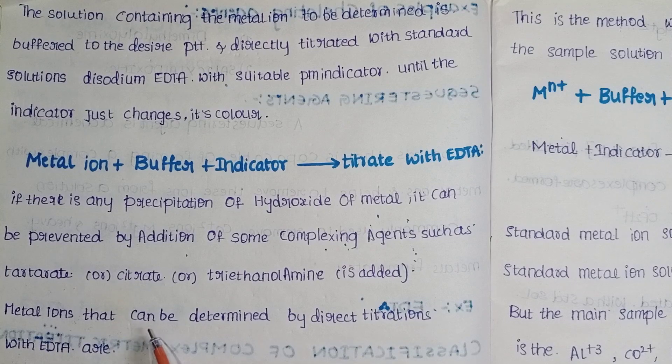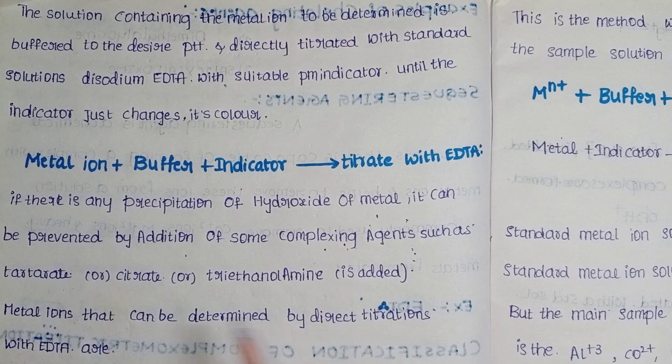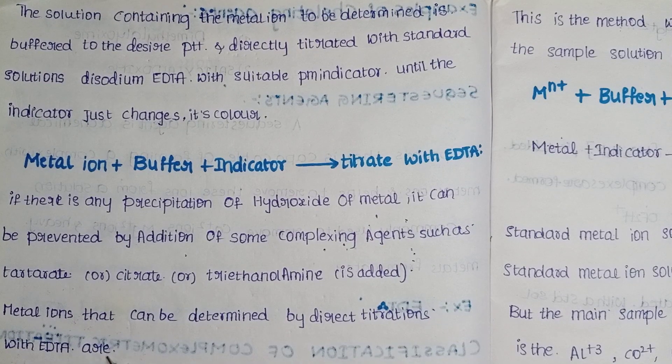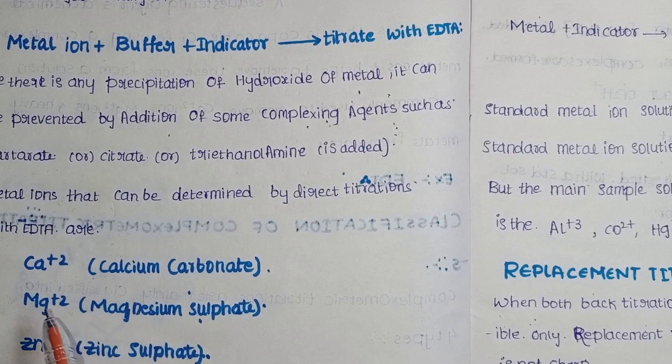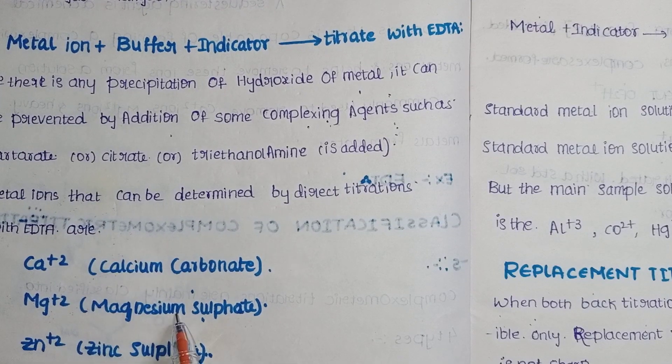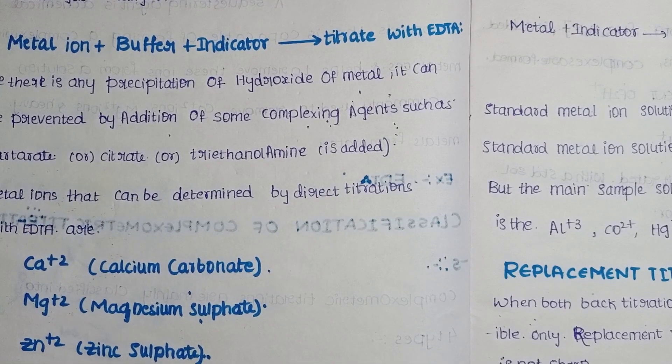Metal ions that can be determined by direct titrations with EDTA are calcium carbonate, magnesium sulfate, and zinc sulfate.